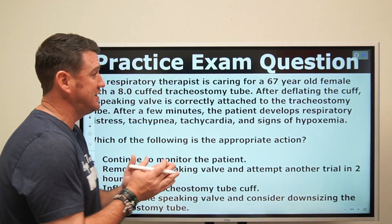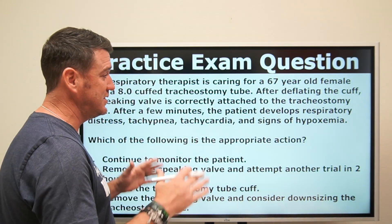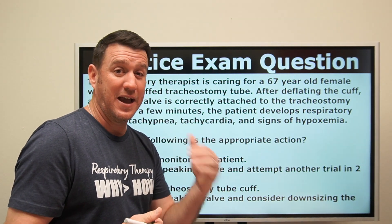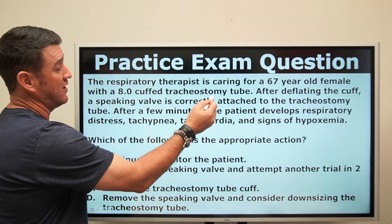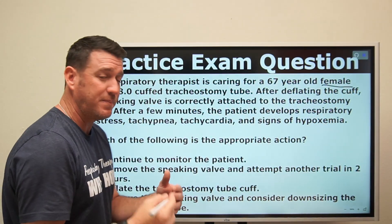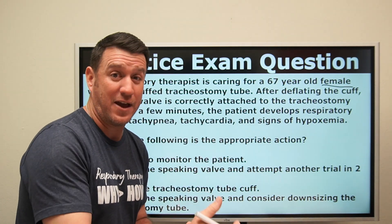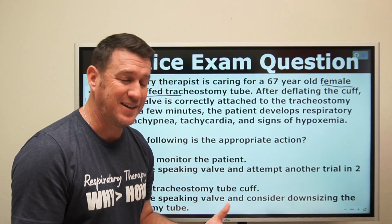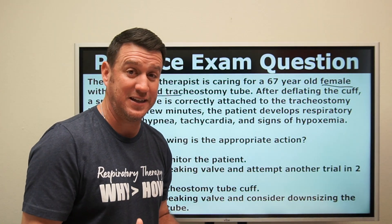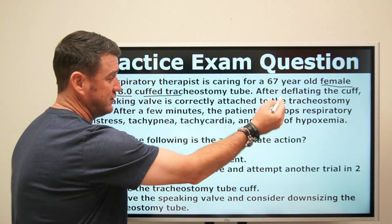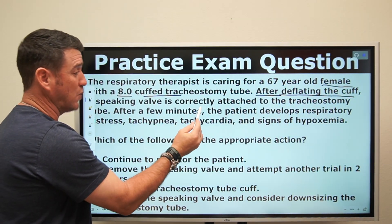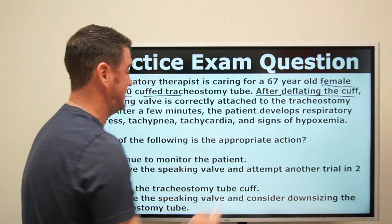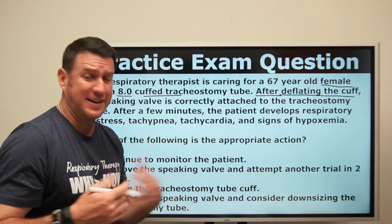Let's take a look at a practice TMC exam question. The respiratory therapist is caring for a 67-year-old female — always note the gender, it might matter — with an 8.0 cuffed tracheostomy tube. After deflating the cuff, a speaking valve is correctly attached to the tracheostomy tube. After a few minutes, the patient develops respiratory distress, tachypnea, tachycardia, and signs of hypoxemia. Which of the following is the appropriate action?